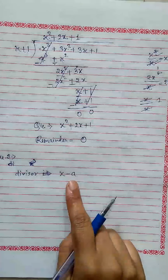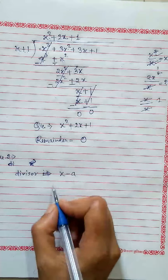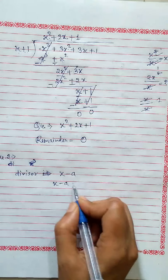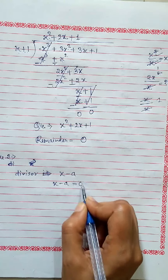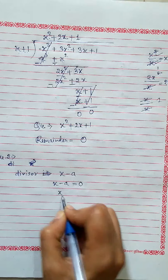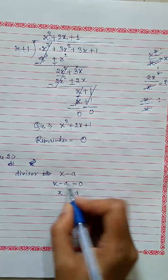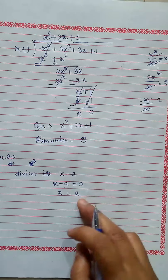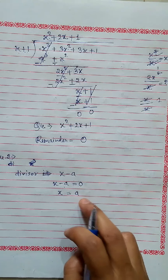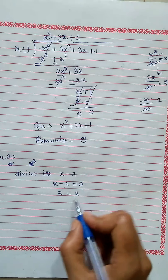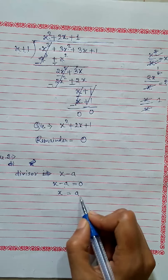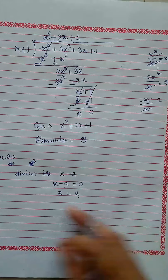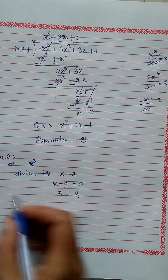Here our divisor is x minus a. If I find the zero of x, I set it equal to 0: x minus a equals 0, so x equals a. Here a is negative, but if we transpose it becomes positive. So the zero of x minus a is a, or the value of x is a.